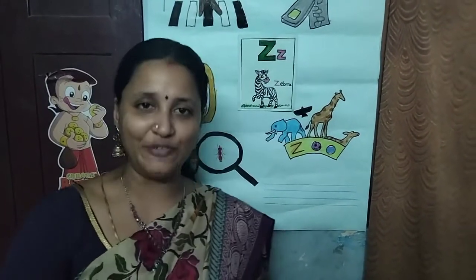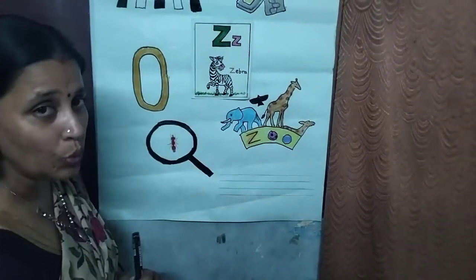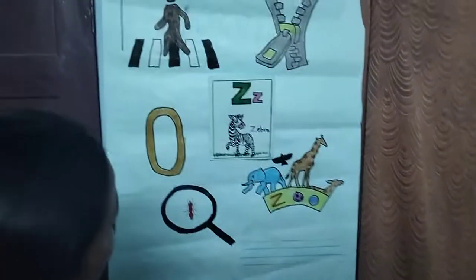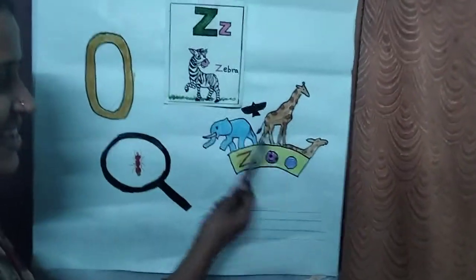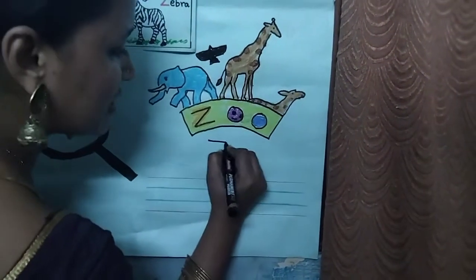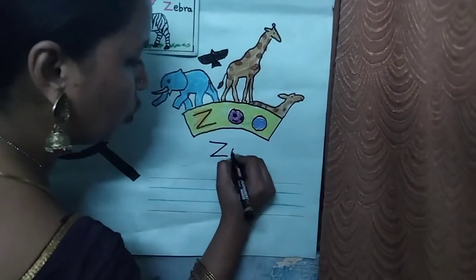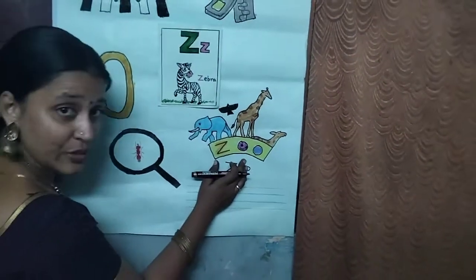Now ma'am will give you clues and you are going to find out the word. Where will we see all the wild animals? Yeah, you are right — it's zoo. Where is the picture of zoo? It's here. See, elephant, giraffe — all that are there. So, zoo. This is the picture of zoo.